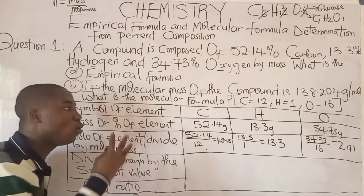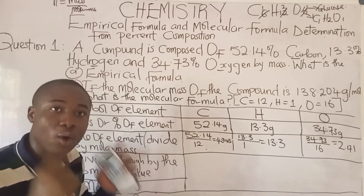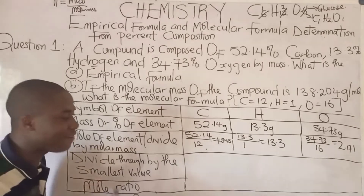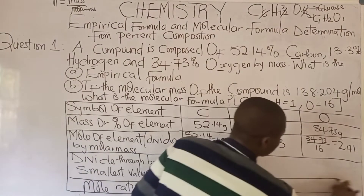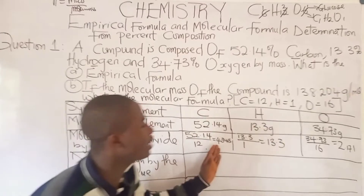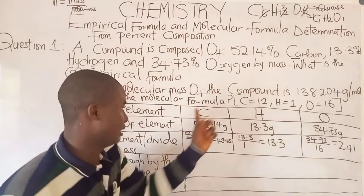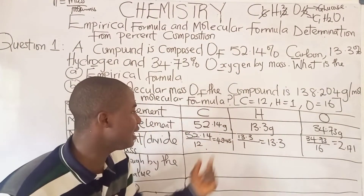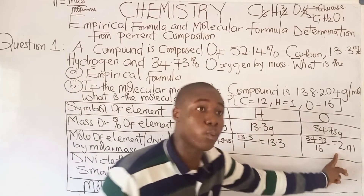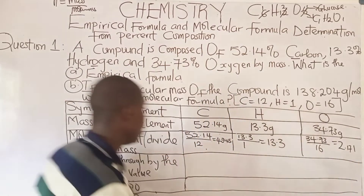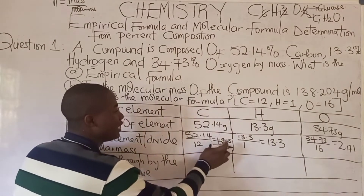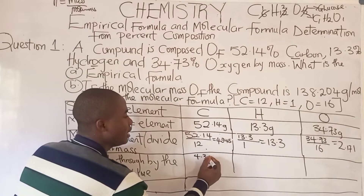These are the number of moles of all the elements making up this compound. To determine the empirical formula, the next step requires us to divide by the smallest value. Looking at all values — carbon is 4.345, hydrogen is 13.3, and oxygen is 2.171 — the smallest is oxygen at 2.171. So we divide everything by 2.171.